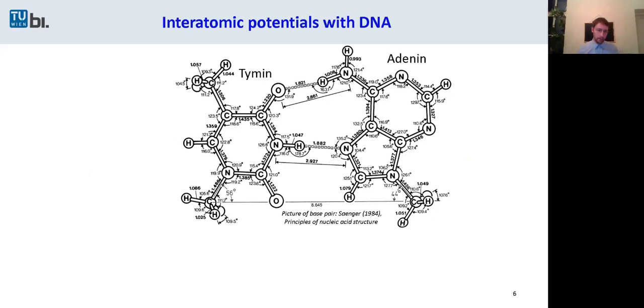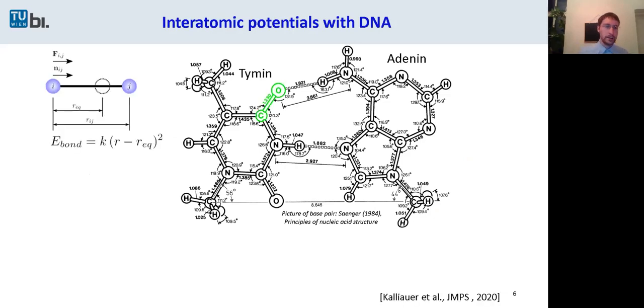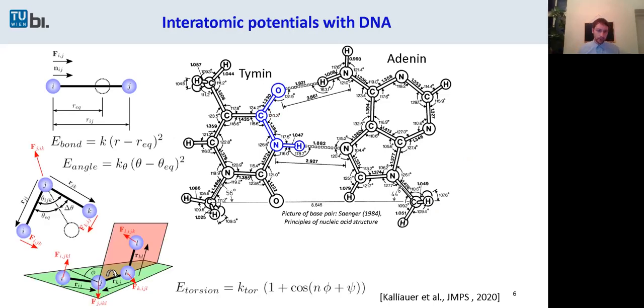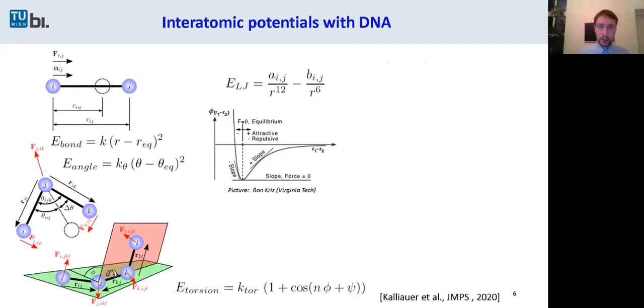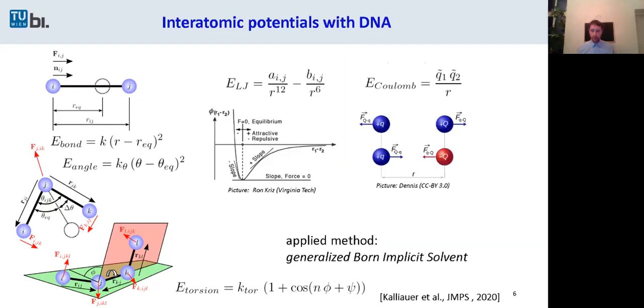And in this molecular dynamics, we have potentials such as the bonding potential, which is about the distance between two atoms, bending potentials, which is about the angle between three atoms, and the torsion potentials, which is about the dihedral angle between four atoms. We also used Lennard-Jones potentials, the Coulomb potentials, and a generalized Born system for accounting for the surrounding water.